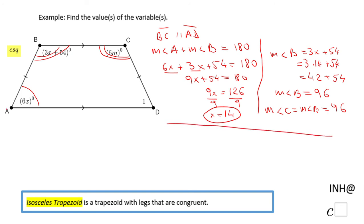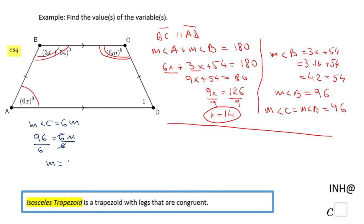Now I can use this fact to find M. The measure of angle C is 6m, and angle C equals 96. So to find M, I divide by 6, and that gives M equals 16.